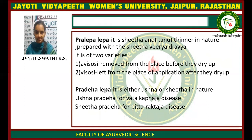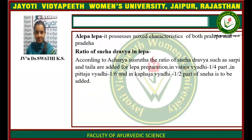Pralepa Lepa is Shita and Dhanu — that is, thinner in nature — and it is of two varieties: Avishoshi and Vishoshi. Avishoshi means the Lepa is removed from the place before it dries up. In the Vishoshi variety, the Lepa is left at the place of application after it dries up. The next variety is Pradeha Lepa, which is either Ushna or Shita in nature. Ushna Pradeha is mainly applied for Vatika Prajya diseases, and Shita Pradeha is applied for Pittaja Prajya diseases. Next is Palepa, which possesses mixed characters of both Pralepa as well as Pradeha Lepa.